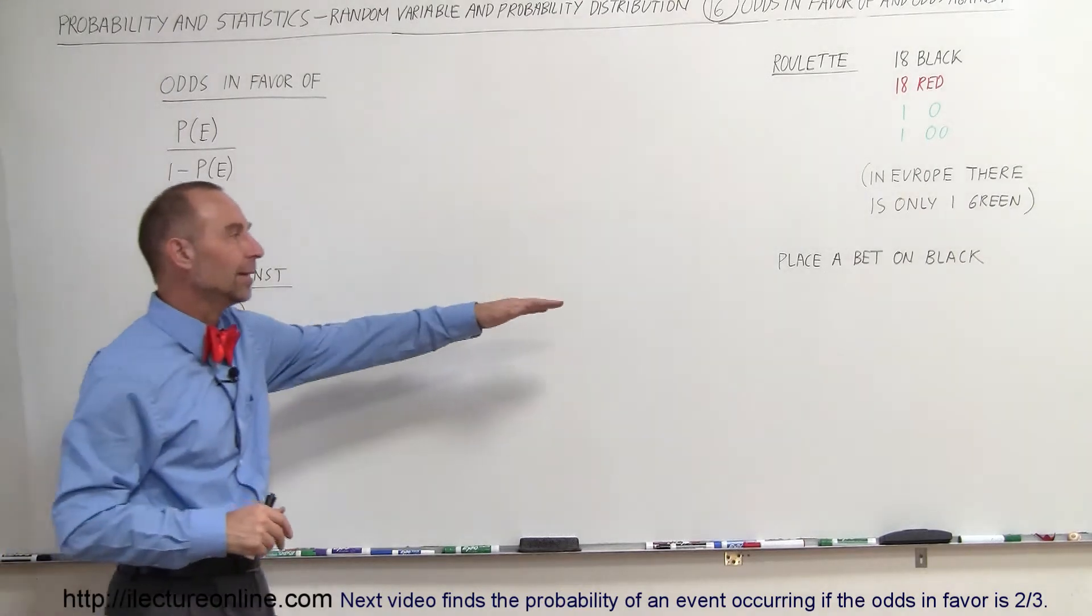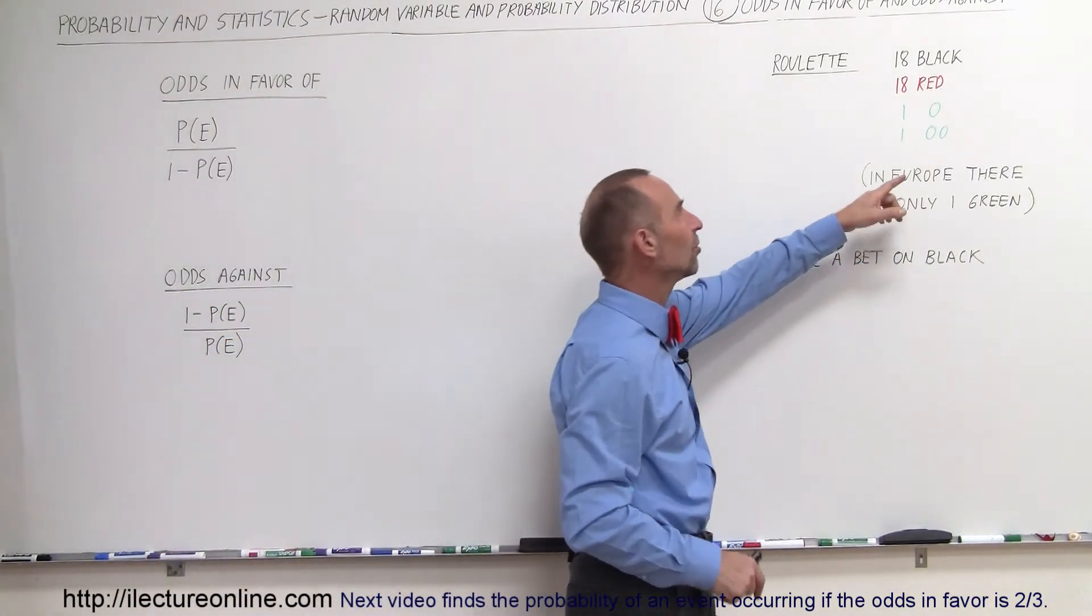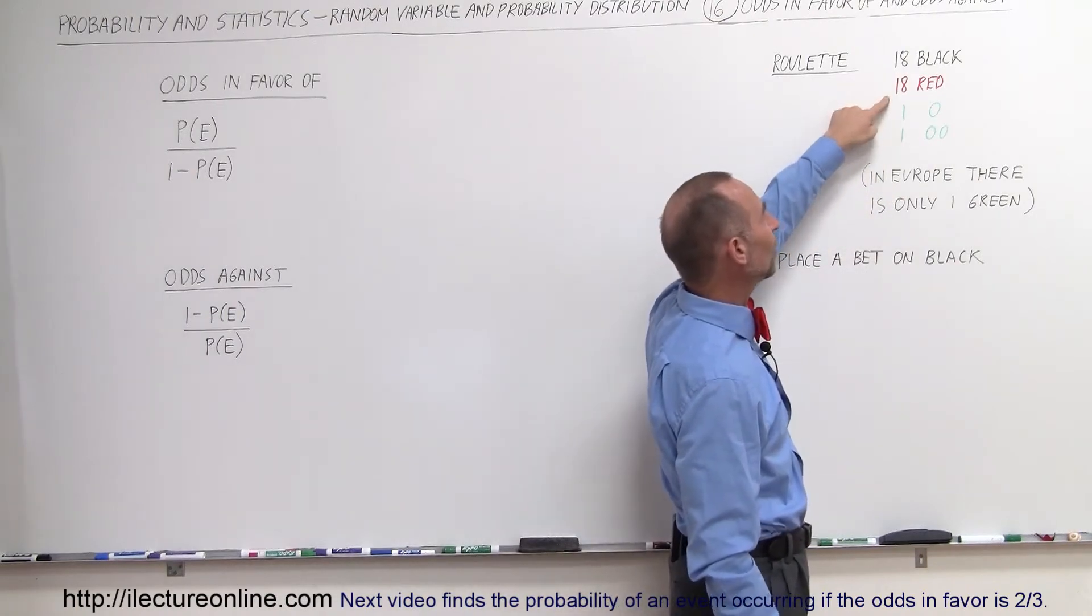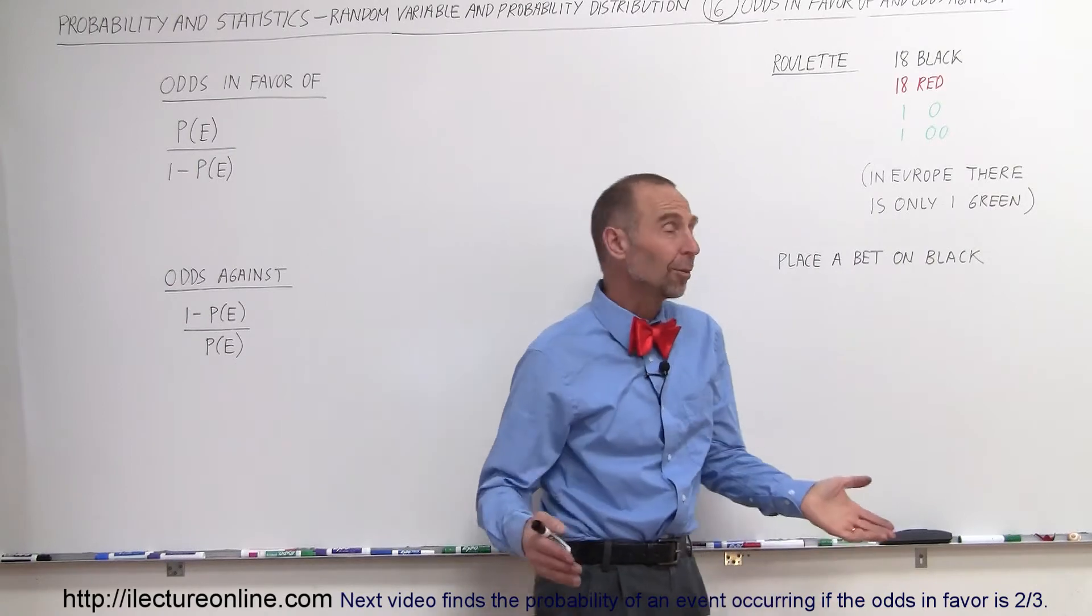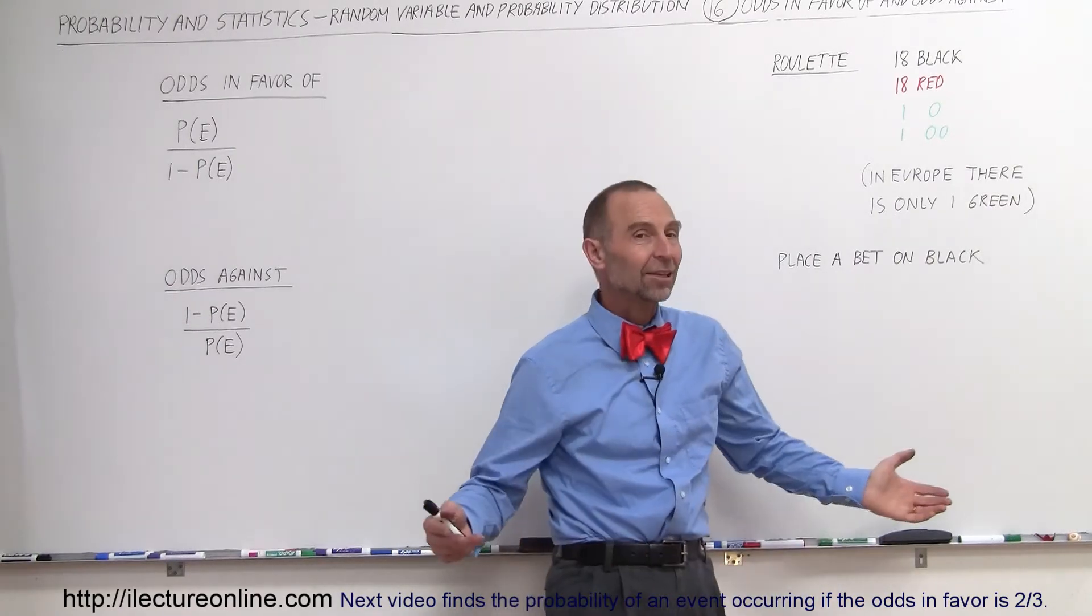So again let's put a bet on black. Of course there's 18 black slots, 18 red slots, one single zero and one double zero. Anytime it ends up on a single or double zero the bank gets all the money, nobody wins a dime.